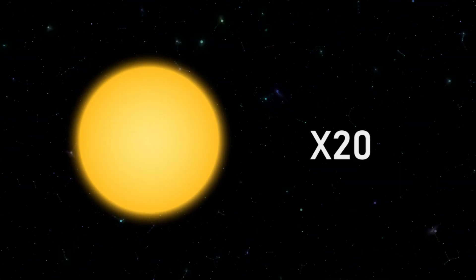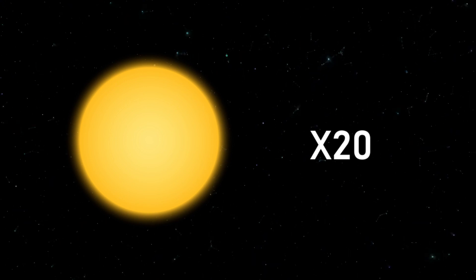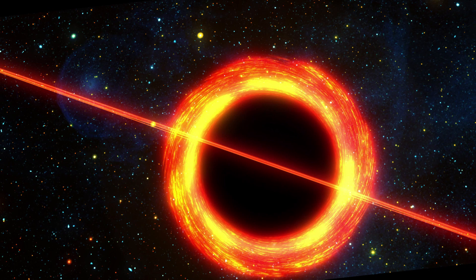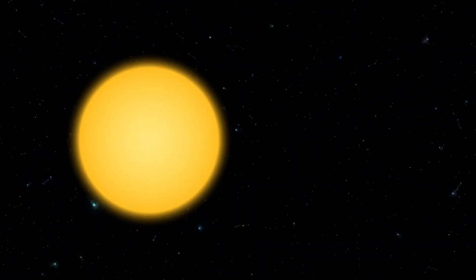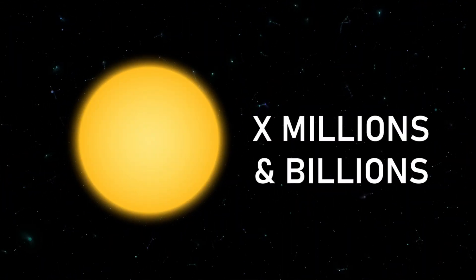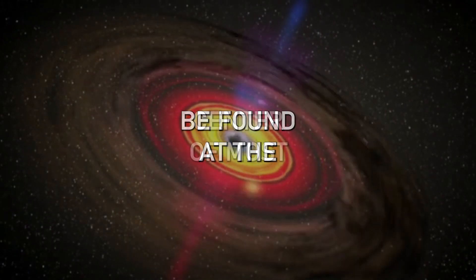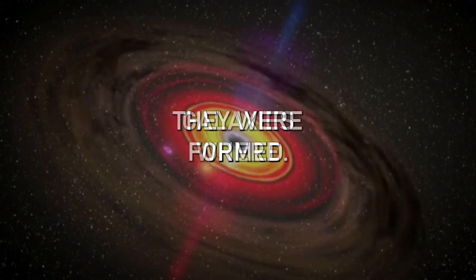Stellar black holes are formed when stars with more than 20 times the mass of the sun collapse. Supermassive black holes, on the other hand, are much larger, with masses millions or even billions of times that of the sun. They are thought to be found at the center of most galaxies where they were formed.